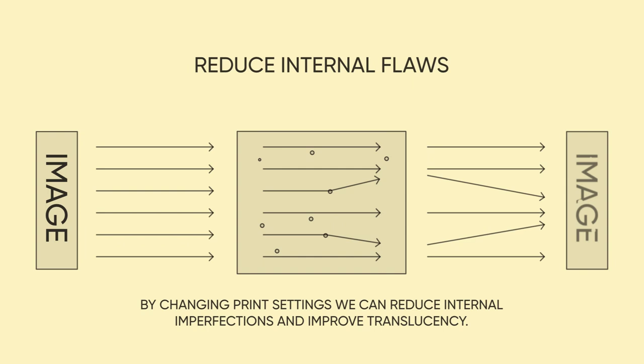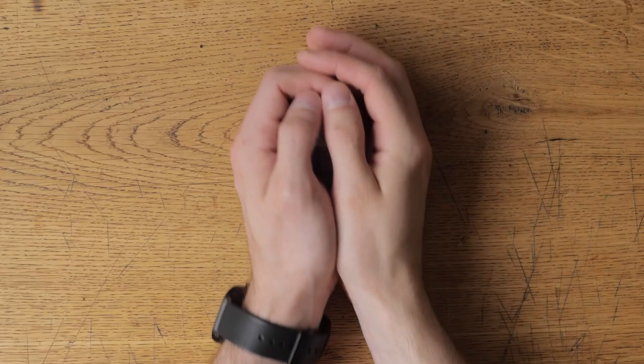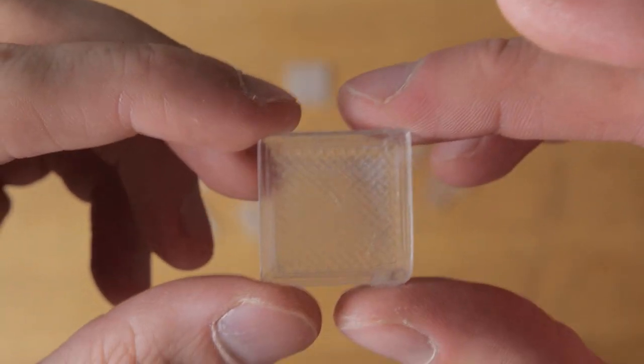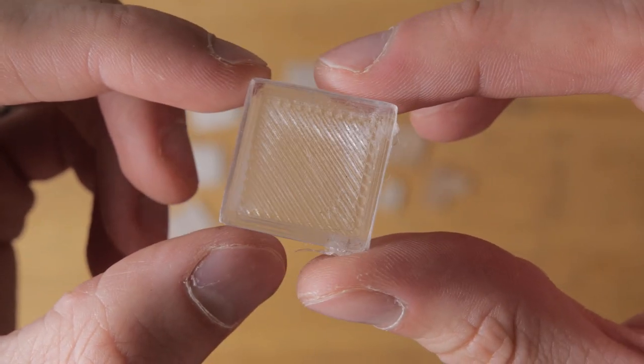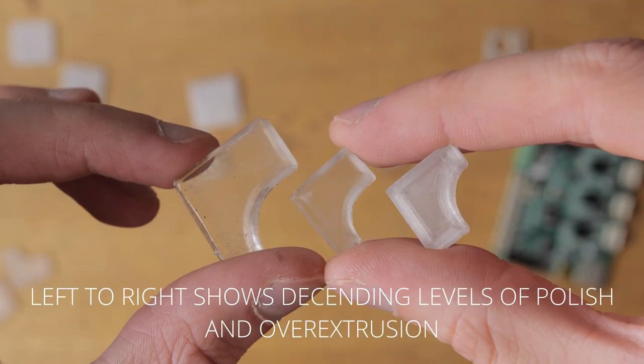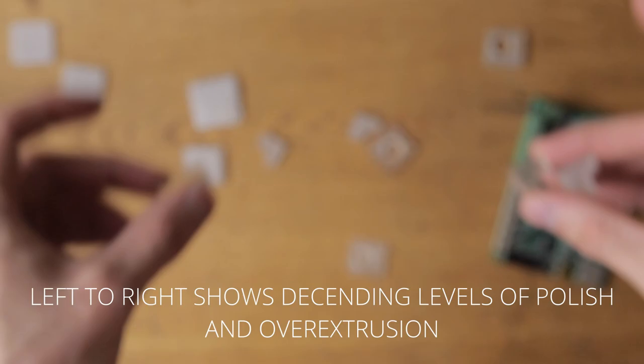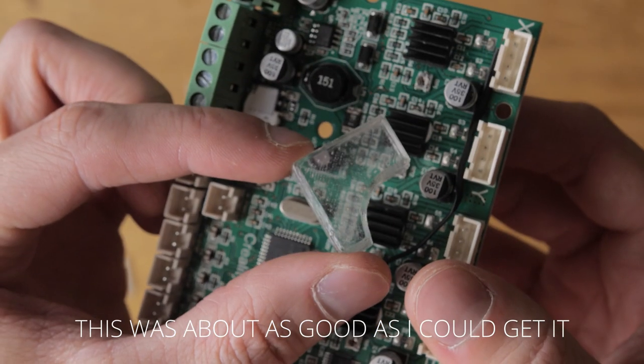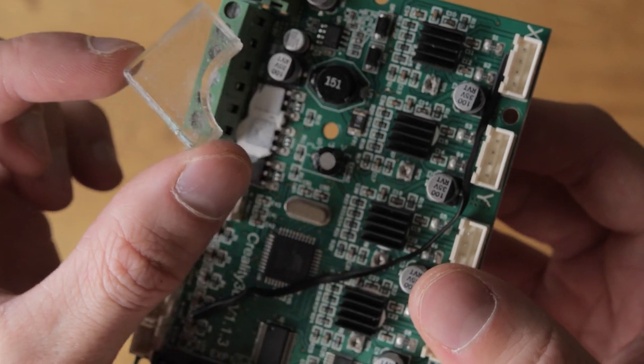I began by printing small blocks to test what effects I could achieve, and found that when printing for maximum transparency, you need a 100% infill with a 105-110% flow rate to make sure all those little bubbles are filled in, before being wet sanded up to 1200 grit and then polished with a polishing compound. I also found that using smaller nozzle sizes and smaller layer heights improved clarity, but increased print time significantly.